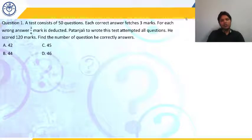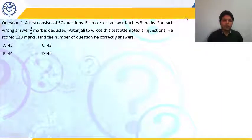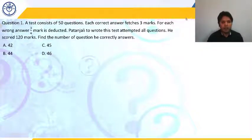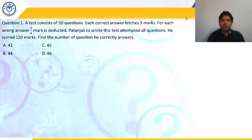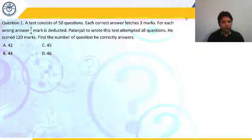Let's start with the first question. Just try to answer it — take 10-15 seconds to read the question. The question says: a test consists of 50 questions. Each correct answer fetches 3 marks, and for each wrong answer, three-fourths of the mark is deducted. Patanjali attempted all questions and scored 120 marks. Find the number of questions he correctly answered.